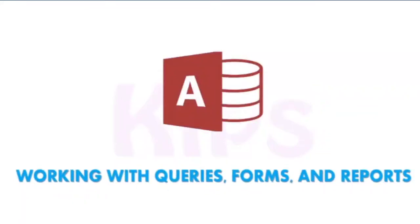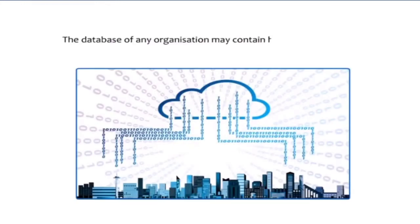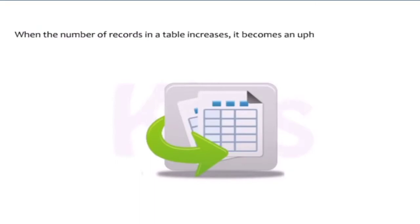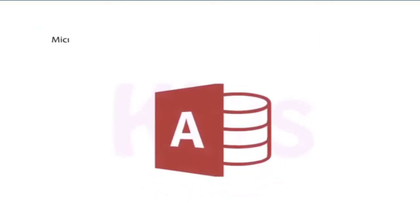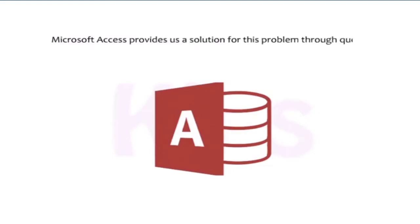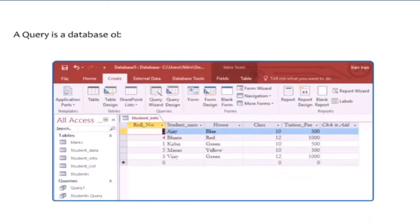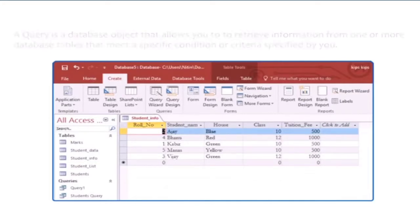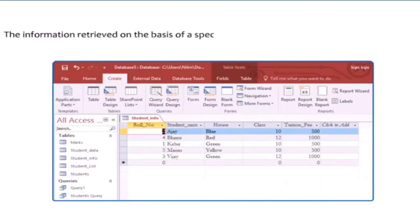We will learn about working with queries, forms, and reports. The database of any organization may contain a huge amount of data and may consist of multiple tables. When the number of records in a table increases, it becomes an uphill task to extract specific records. Microsoft Access provides a solution through queries — a database object that allows you to retrieve information from one or more tables meeting a specific condition. The retrieved information is stored in a separate table called the query table.